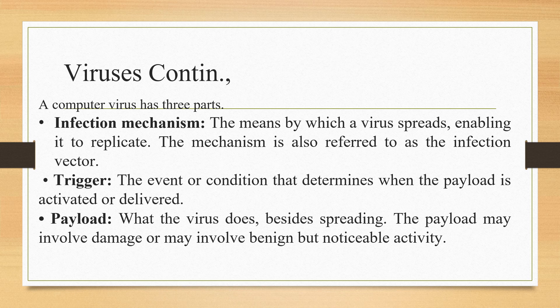The infection mechanism is the means by which a virus spreads, enabling it to replicate — also referred to as the infection vector. The trigger is an event or condition that determines when the payload is activated or delivered. The payload is what the virus does besides spreading; the payload may be harmless or may involve noticeable damaging activity.